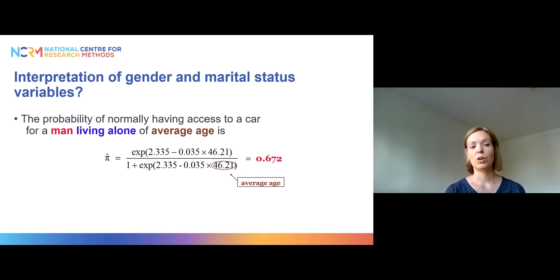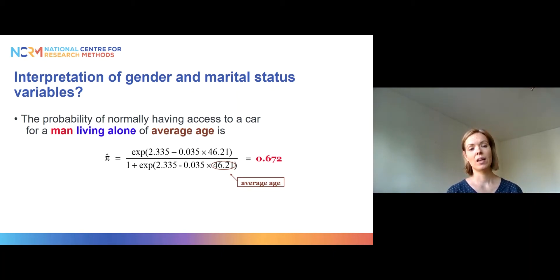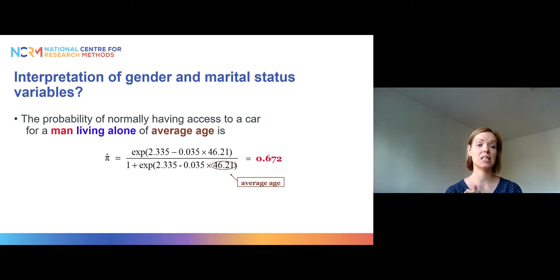The interpretation of marital status and gender is a bit tricky because of the interaction effect. About 90% of the time, the easiest way to interpret an interaction in a logistic regression model is to calculate fitted probabilities for a range of different values and put them in a table. We will vary gender and marital status and calculate probabilities for different combinations, keeping age constant at the average age in this data, which is 46.21 years.